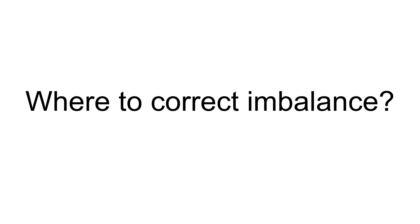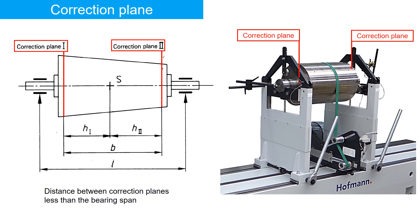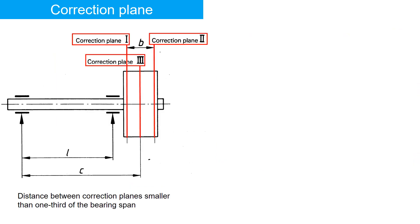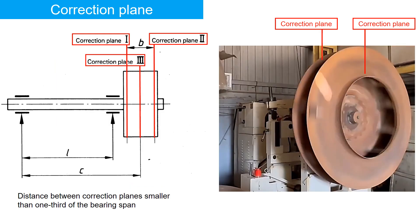So where should we correct imbalance? When there is a heavy mass in between the bearings, the correction plane will be at the ends of the heavy mass, as shown in this figure. For impellers on a shaft at each end, correction should be made at the impellers. For an overhung geometry, correction should be made at the overhung impeller.